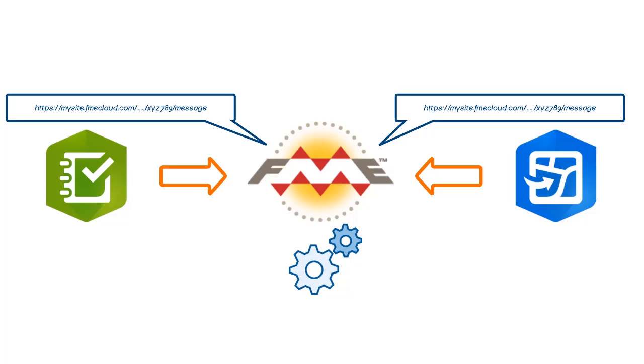With webhooks, instead of an email, the source web application sends data using an HTTP request to the destination URL. The data sent in the request is typically in JSON format.